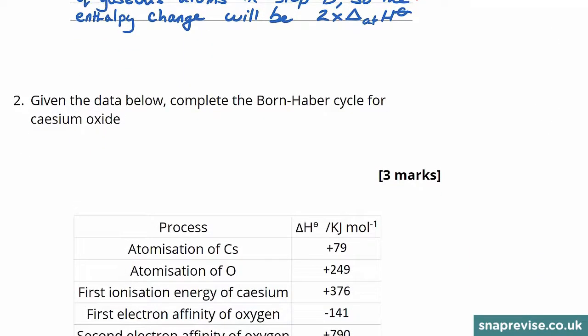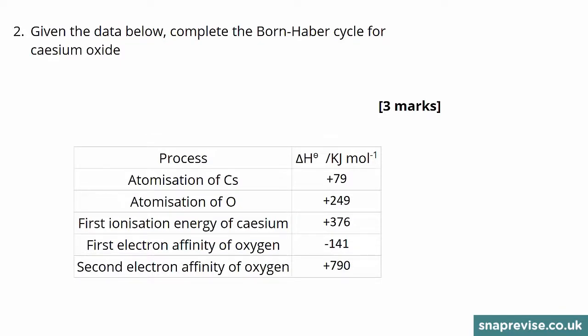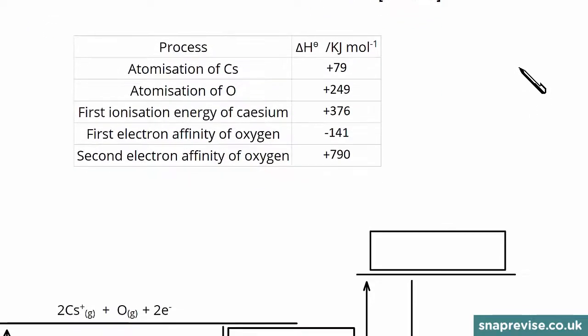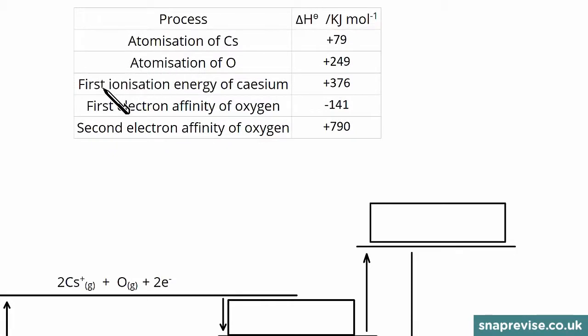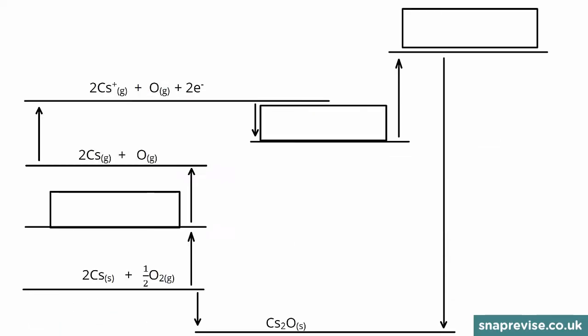Now let's look at the next question. Given the data below, complete the Born-Haber cycle for caesium oxide. The table gives us: atomisation of caesium, atomisation of oxygen, first ionisation energy of caesium, first electron affinity of oxygen, and second electron affinity of oxygen. Here's the Born-Haber cycle — we're forming caesium oxide, Cs₂O. We start with the elements in their standard states. The first two steps are atomisation: turning solid caesium into gaseous caesium atoms and turning diatomic oxygen molecules into singular oxygen atoms.